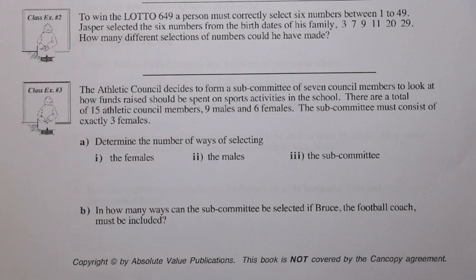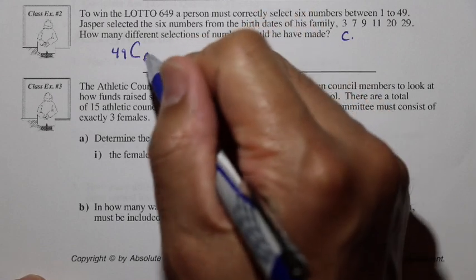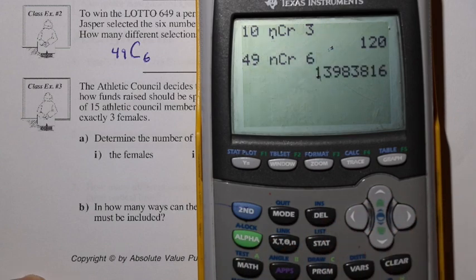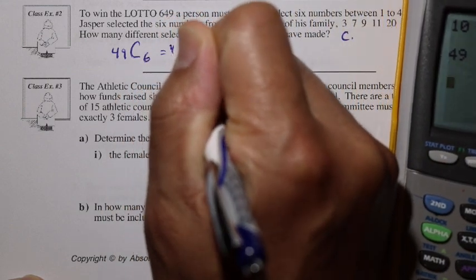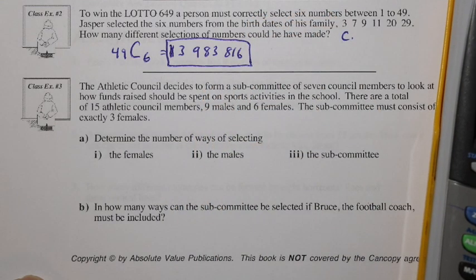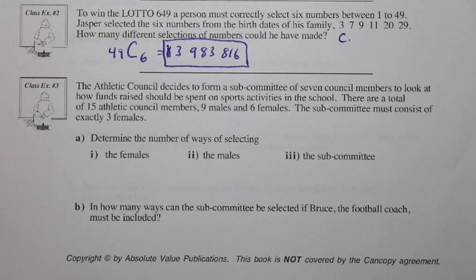Class Example 2: to win the Lotto 649, a person must correctly select 6 numbers between 1 and 49. Jasper selected 6 numbers from the birthdates of his family: 3, 7, 9, 11, 20, and 29. How many different selections of numbers could he have made? Out of 49 numbers, he's going to select 6 without caring about the arrangement of those numbers. So 49C6, using the calculator, gives us 13,983,816. Imagine your chances for Lotto 649 — there are 13,983,816 possible ways to select the 6 numbers.